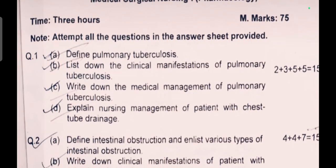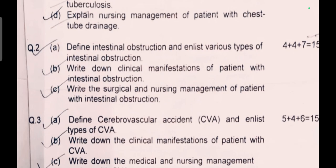Question number one: (a) Define pulmonary tuberculosis — 2 marks. (b) List down the clinical manifestations of pulmonary tuberculosis — 3 marks. (c) Write down the medical management of pulmonary tuberculosis — 5 marks. (d) Explain nursing management of patients with chest tube drainage — 5 marks. Total 15 marks.